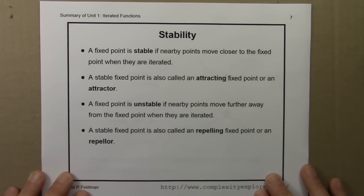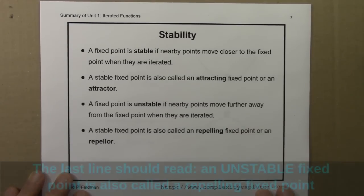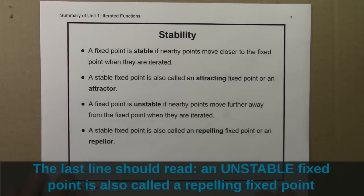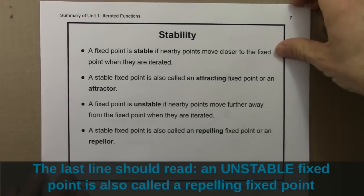A fixed point is unstable if nearby points move further away from the fixed point when they're iterated. An unstable fixed point is also called a repelling fixed point or a repeller.